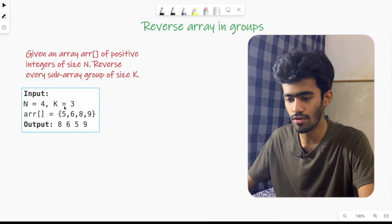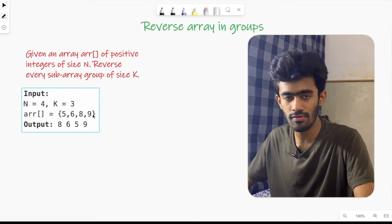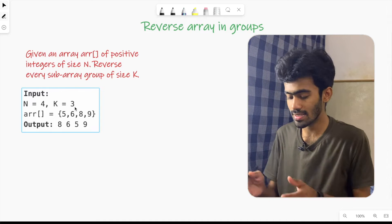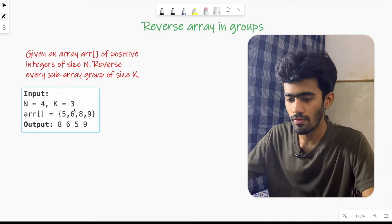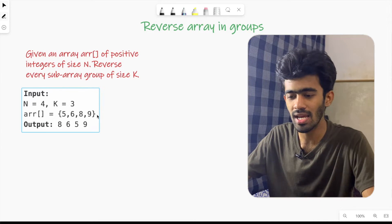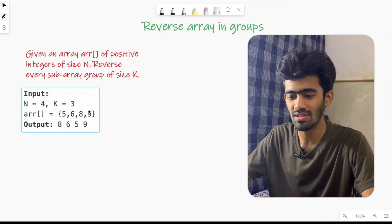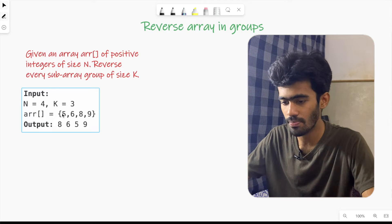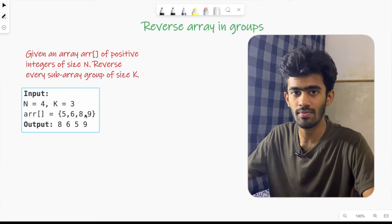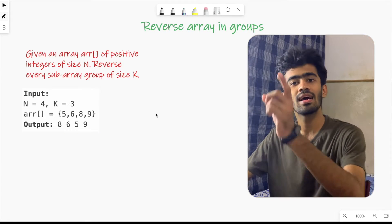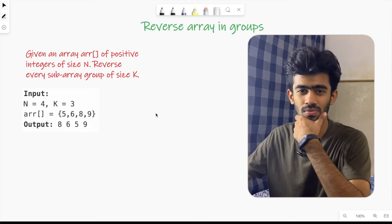The input is N equals 4, K equals 3. N=4 is the total size of the array. K=3 is the subgroup, the subarray is 3. First, 5, 6, 8 is the subarray. Remaining N, in this case 9, is the other subarray. First 3 elements form the subarray, then the last one is the remaining subarray.